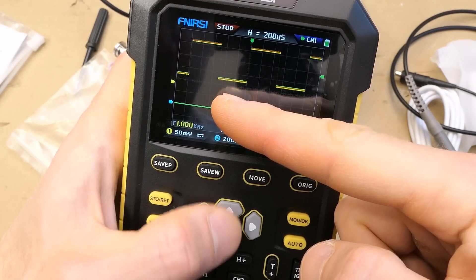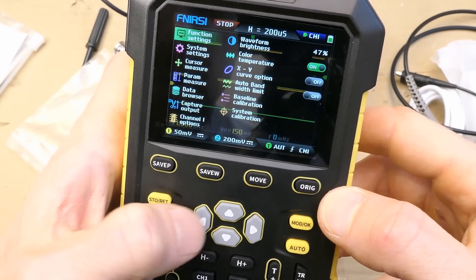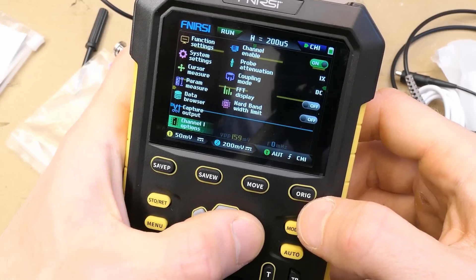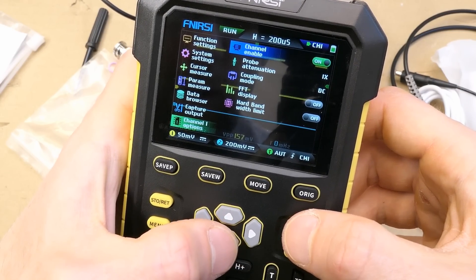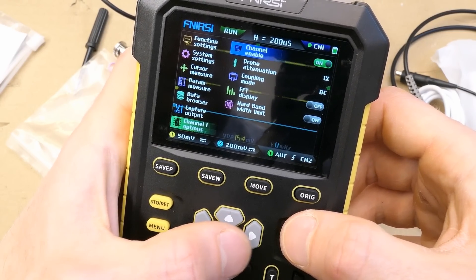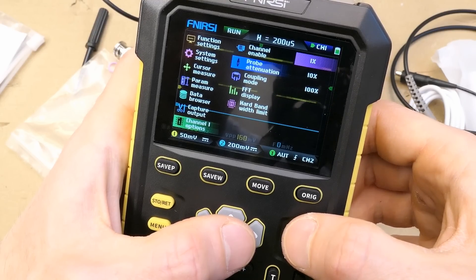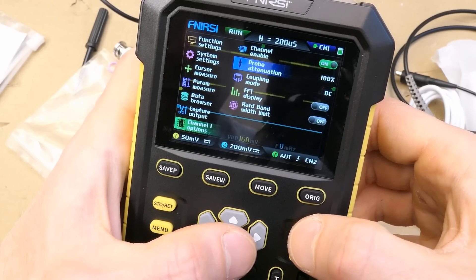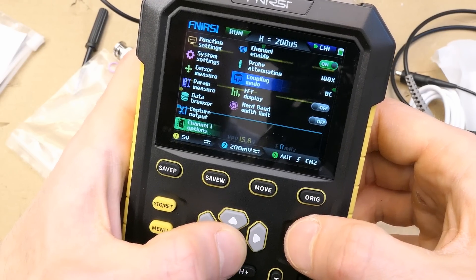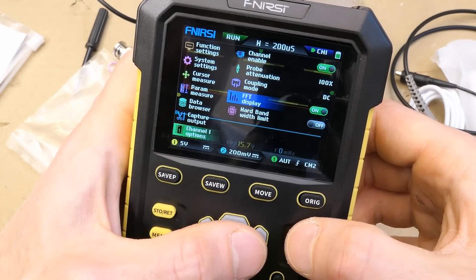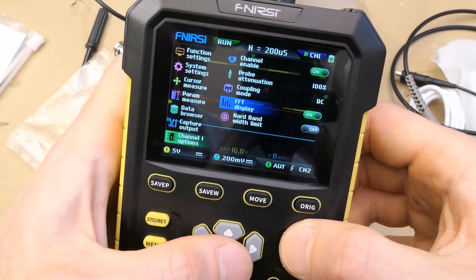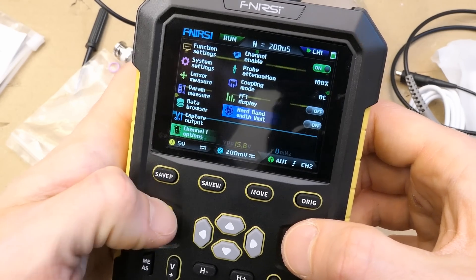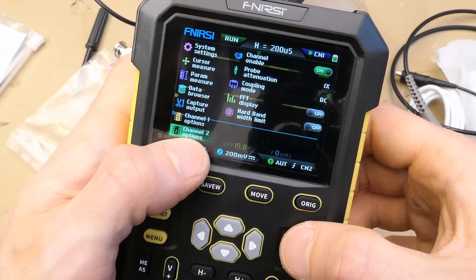Color temperature is like a rainbow or spectrum for the digital phosphor I guess, here you can turn it off, channel options, enable channel, channel one, probe and do FFT, amazing, hard bend with limit, and I guess the same settings will be for the other channel.